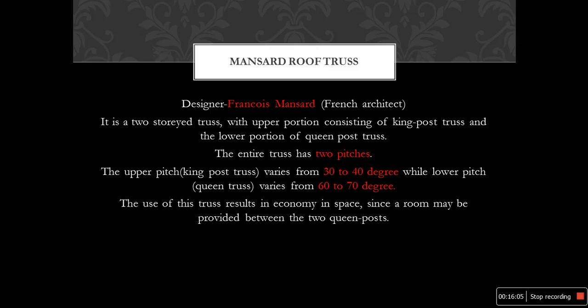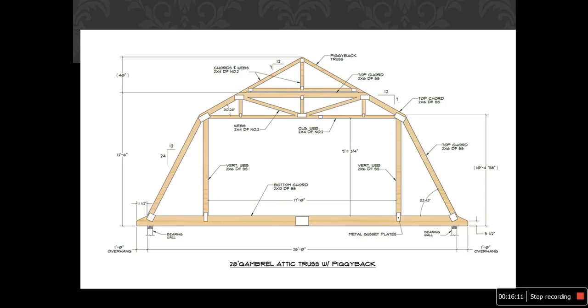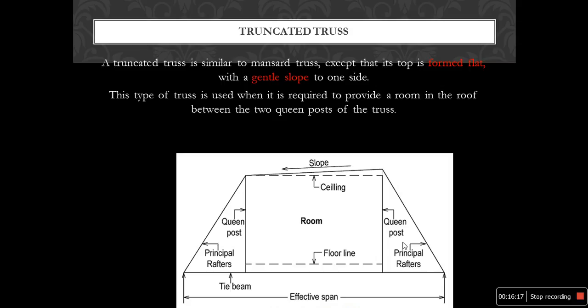The truncated truss is similar to the mansard truss but instead of sloping it has a truncated shape, also with a combination of queen posts. This type of truss is used when it is required to provide a room in the roof between the two queen posts.